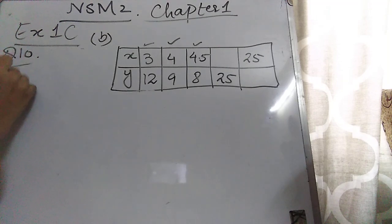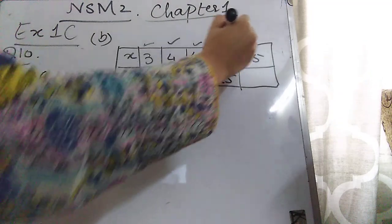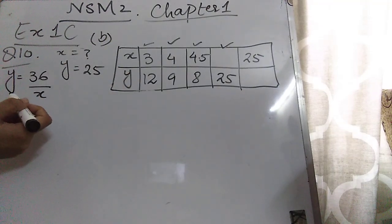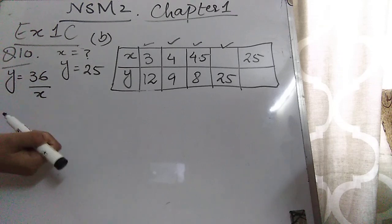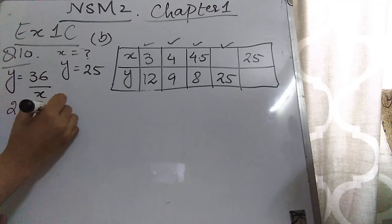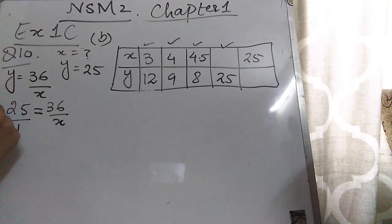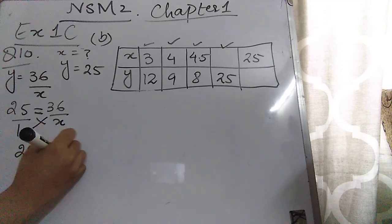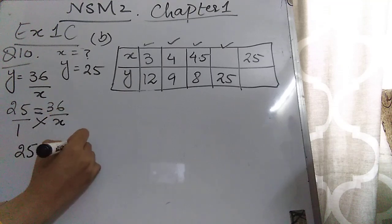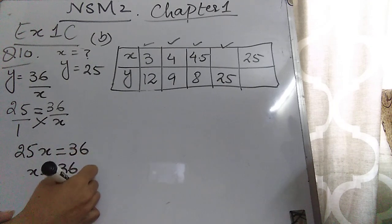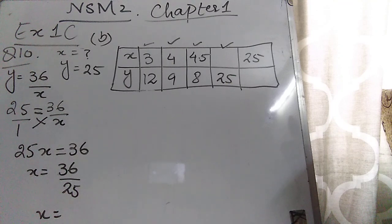In the next column, find x when y = 25. The main equation is y = 36/x. Put y = 25: 25 = 36/x. There is no denominator on the left so put 1, and cross multiply: 25x = 36. This 25 is multiplying so it divides: x = 36/25 = 1.44.